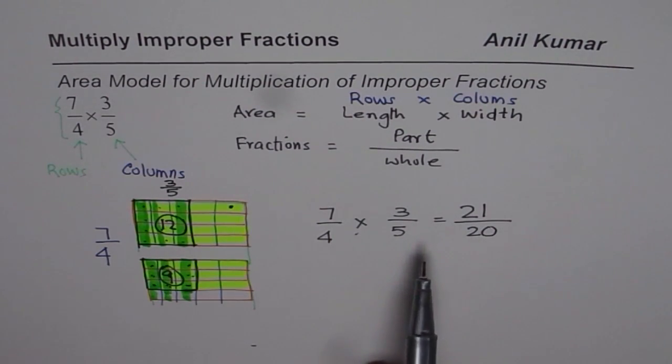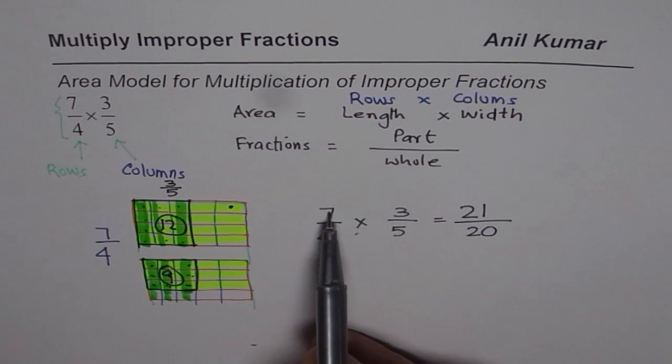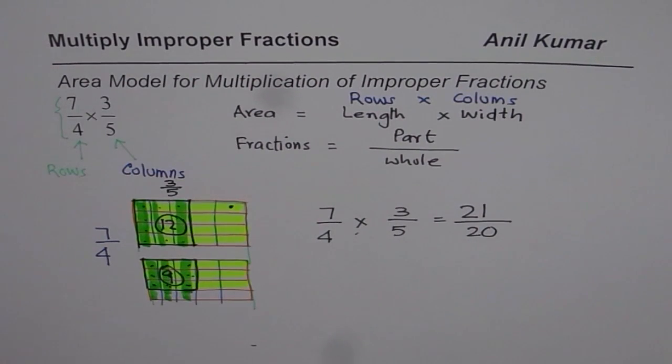As you know, to multiply fractions, what do we do? We multiply numerators. 7 times 3 is 21. 4 times 5 is 20. And get the answer. So it matches. That means the answer is correct.